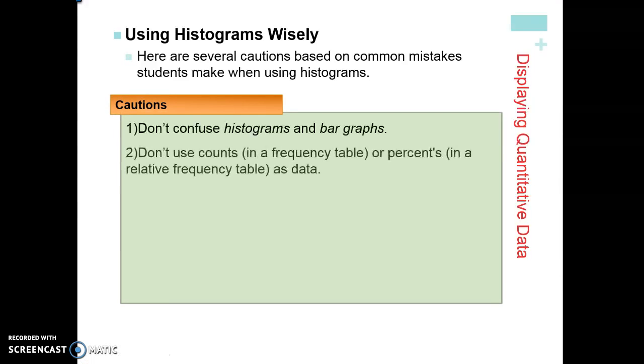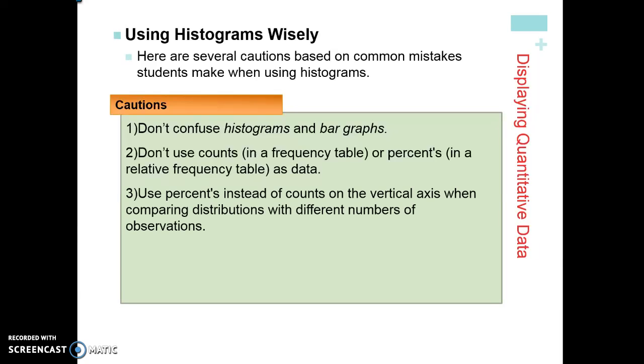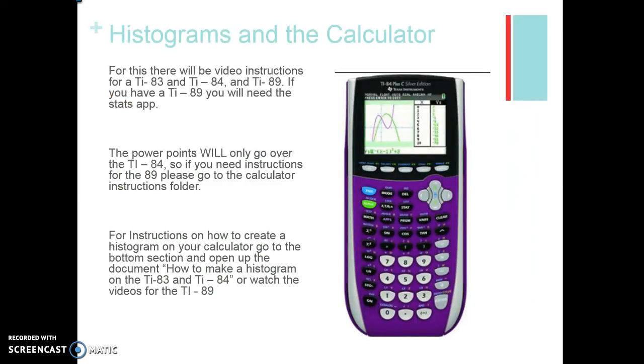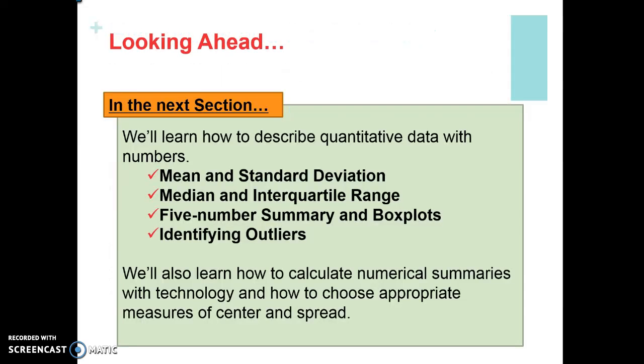Just make sure when you're doing histograms, don't confuse histograms and bar charts. Don't use counts. Use percents instead of counts on the vertical axis when you have distributions with different number of observations, like 100 versus 200. Just because a graph looks nice doesn't necessarily mean it's a meaningful display of the data. And just so you know, for this course in the PowerPoints, I will be going over how to do stuff on the TI-84. If you want the TI-89 instructions, you'll need to go to the calculator instruction folders on Blackboard. In the next section, we're going to take a look at the following information. So be on the lookout for the video.